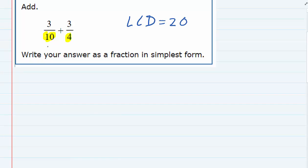So we're going to need to rewrite each one of these fractions as something over 20. We're going to rewrite the one on the left over 20, the one on the right over 20. It's still going to be addition, but we need to get that common denominator of 20.